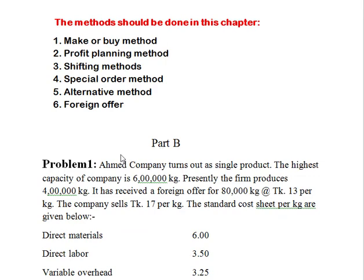I am going to register them one by one. Problem 1: Ahamid Company turns out a single product. The highest capacity of the company is 6,000 kg and the present capacity is also 6,000 kg. Presently the firm produces 4,000 kg. It has received a foreign offer to order at the rate of 30,000 kg.